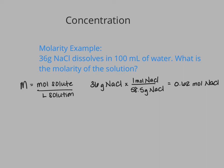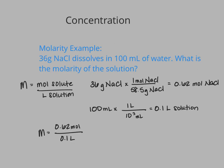Next, I need to have my liters of solution. They only gave us our milliliters of solvent, but we can actually assume that our final volume of our solution is going to be the same as the initial volume of water that we started with, because we don't expect our solute to change the volume all that drastically. So we can use our 100 milliliters of water as the volume for our solution. But first, we need to convert it from milliliters to liters. When we convert 100 milliliters to liters, we get 0.1 liters. Now I have my moles of solute and my liters of solution, so I can plug those into my molarity formula: 0.62 moles divided by 0.1 liters.